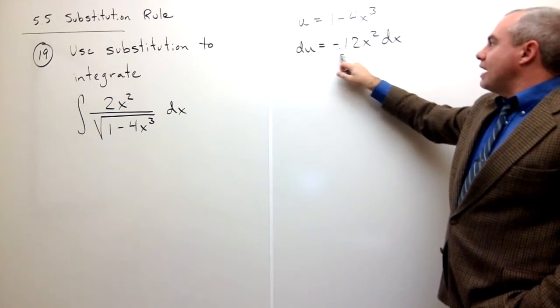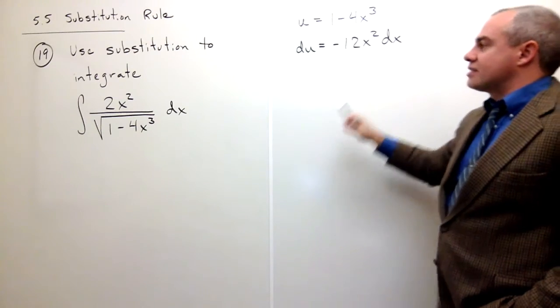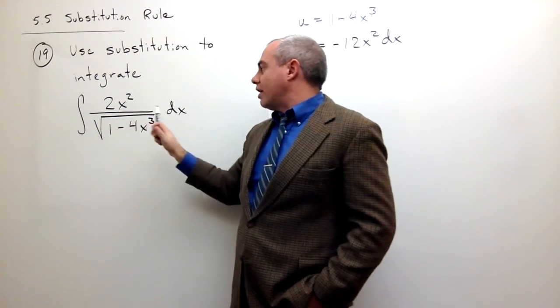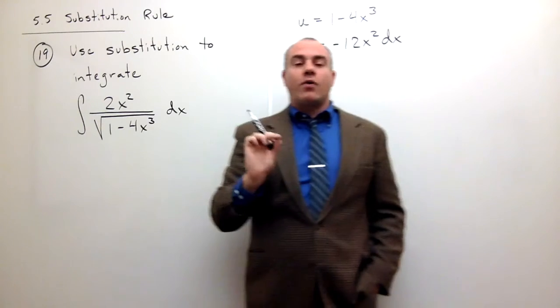Du, well, that's minus 12x squared dx. And all I have here is a 2x squared dx. It's not quite right.